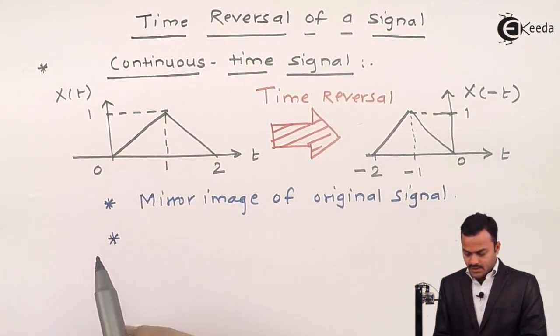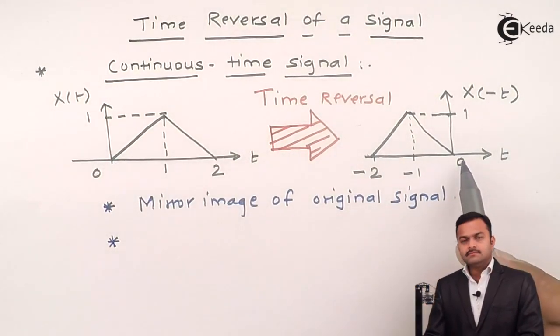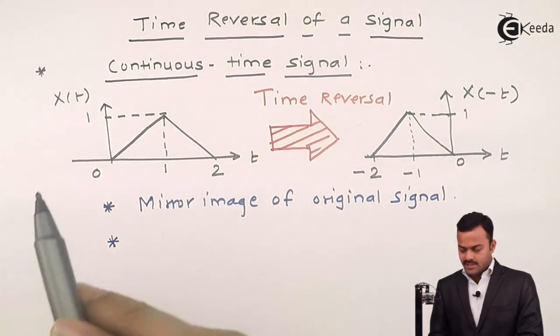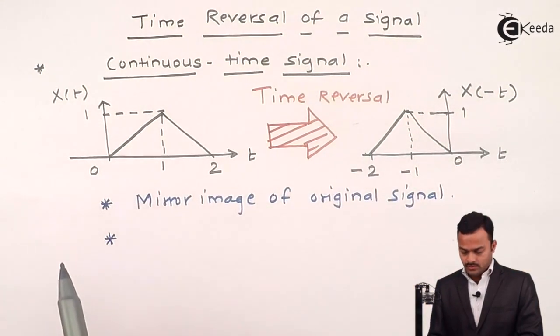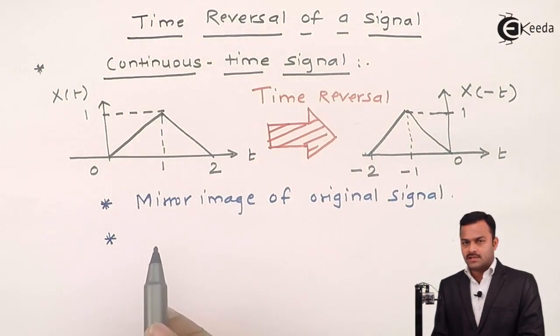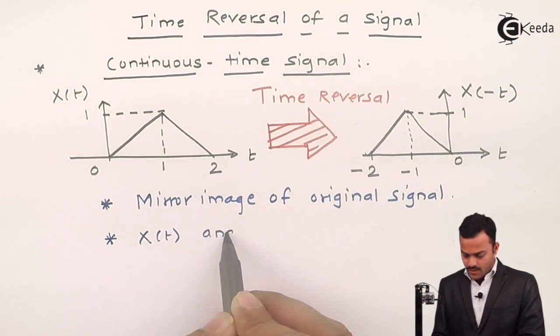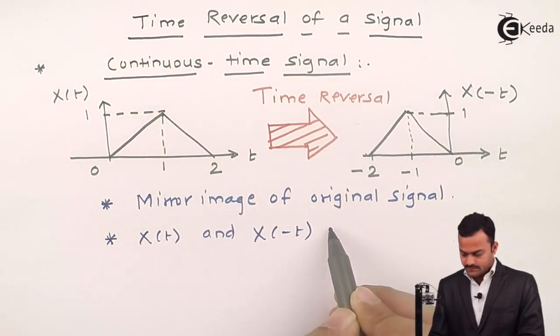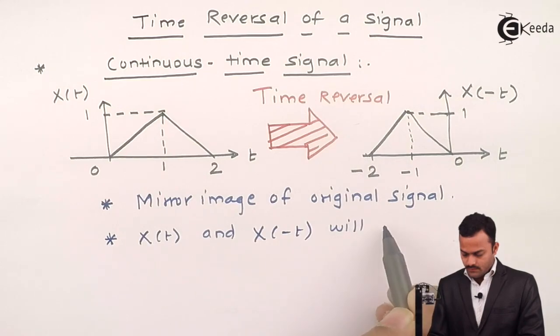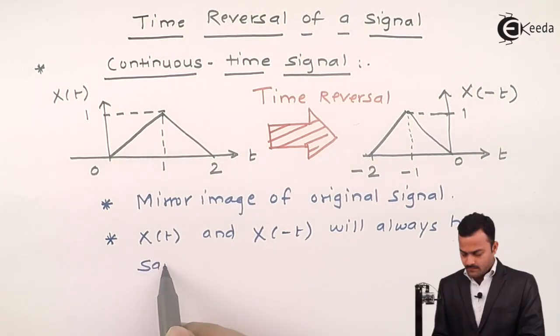This is the operation which gives us change in the independent variable, which is t, without any change in the dependent variable, which is x of t. So, what we can say over here, in this particular operation of a signal, x of t and x of minus t will always have same magnitude.